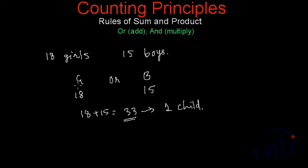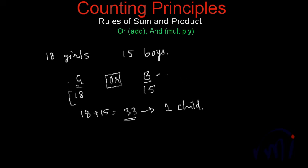Here the selections are actually in OR. If you select a girl, you are not selecting a boy, and if you select a boy, you are not selecting a girl. So the task of selecting a student is actually the task of selecting a girl OR the task of selecting a boy. In this case, there are 18 ways to select a girl and 15 ways to select a boy. So there are total 18 plus 15, that is 33 ways to select a child.